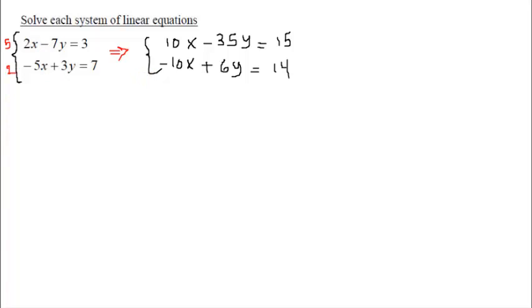So in this case, we already made the coefficient of x opposite. So we can proceed by adding these two. So 10x minus 10x equal to zero. So what do we get here, Sunith? We'll get negative 29y equal 29.